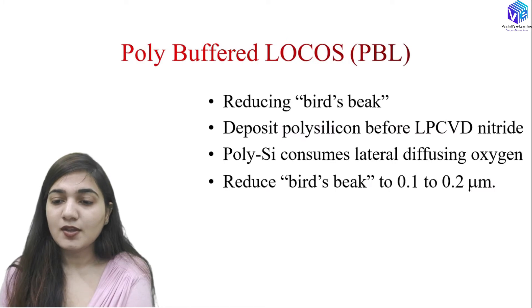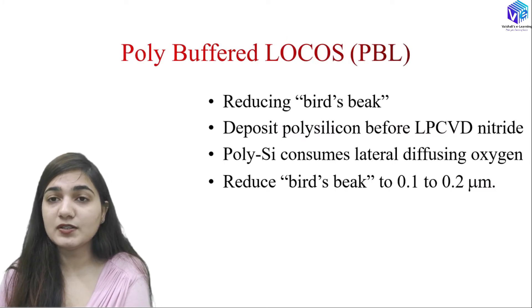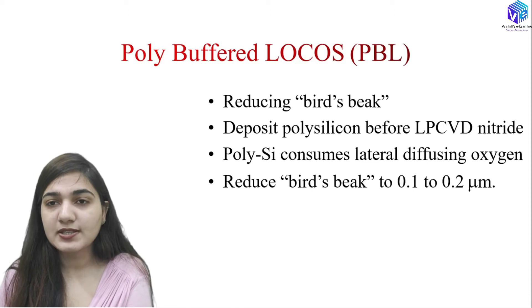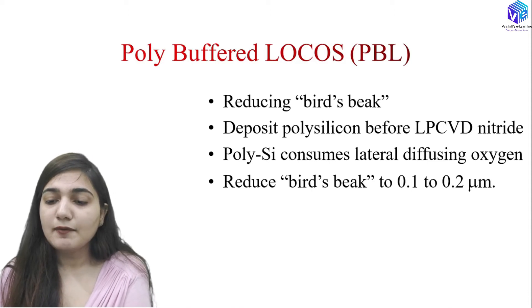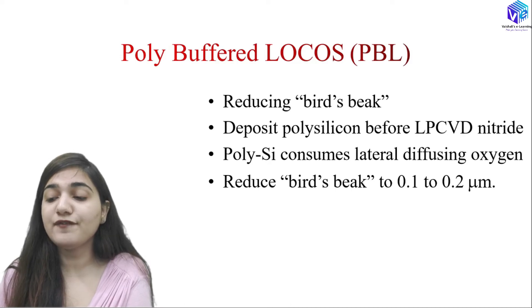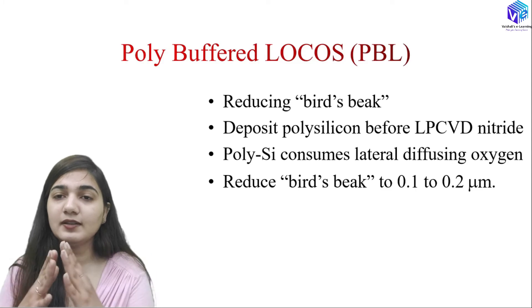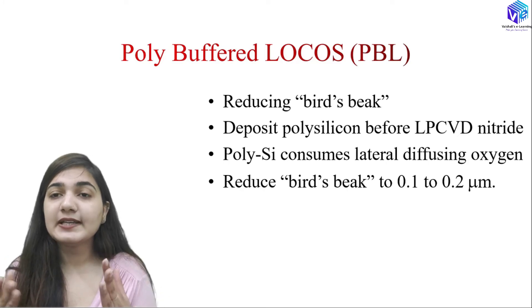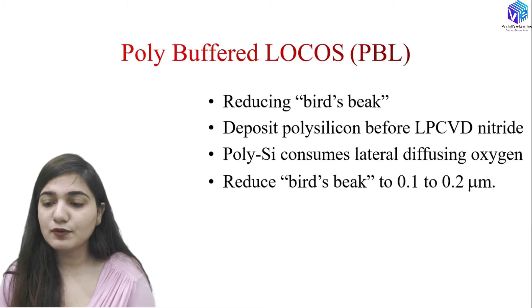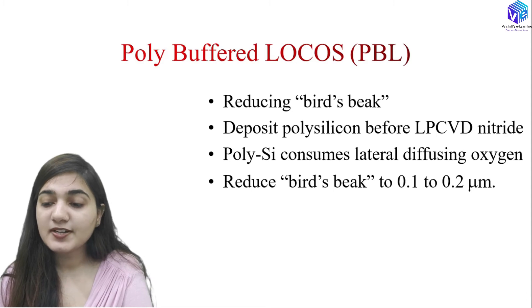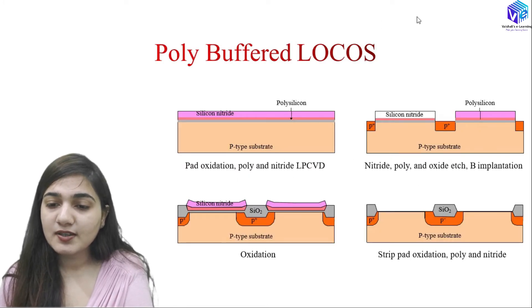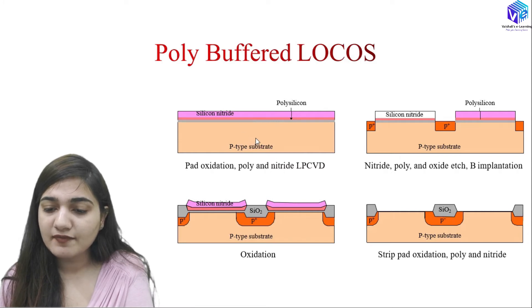Now coming to poly-buffered LOCOS (PBL). Poly-buffered LOCOS is used to reduce the bird's beak problem. Here we deposit polysilicon before the LP-CVD nitride. First, we deposit the polysilicon, then the nitride layer. The polysilicon consumes the lateral diffusion of oxygen, preventing the increase in SiO₂ area. This reduces the bird's beak from 0.2 micrometers to 0.1 micrometers, hence increasing the activation area.